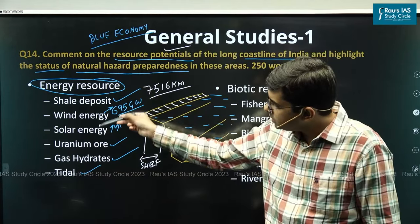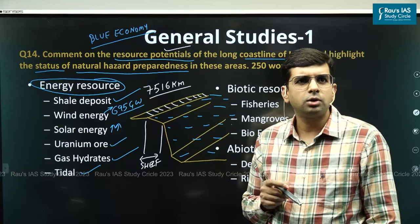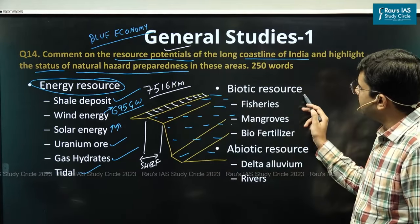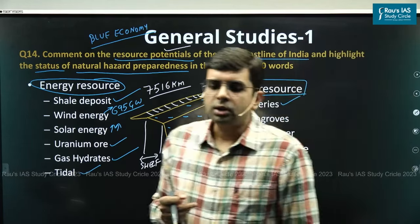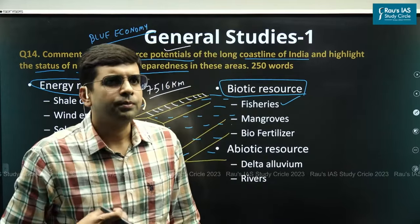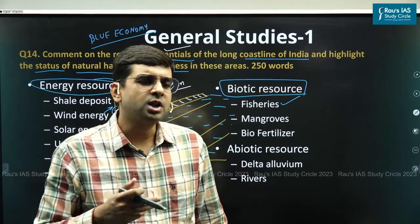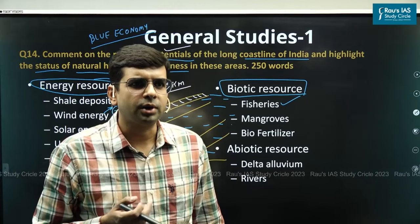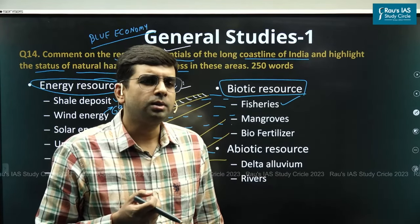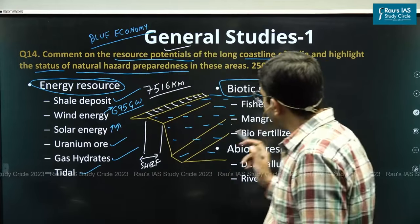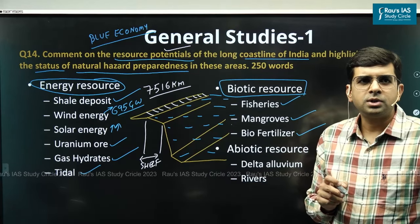Multiple energy resources are present along India's 7,516 km coastline. Apart from energy resources, bio-resources are also present — fisheries are connected to economic development through improved fish catch and offer significant export potential. Fisheries also provide food security to coastal populations. Mangroves are present along with blue-green algae in coastal waters, which serves as a biofertilizer.